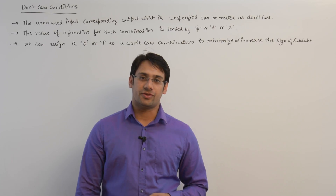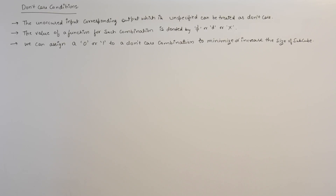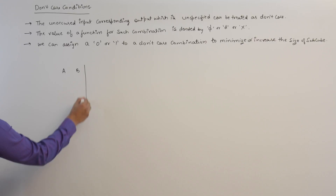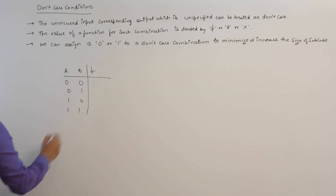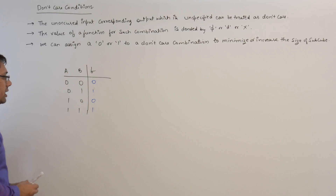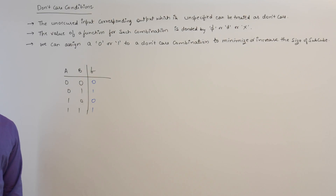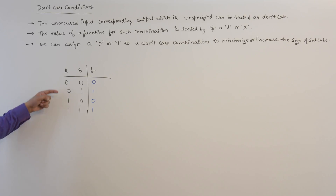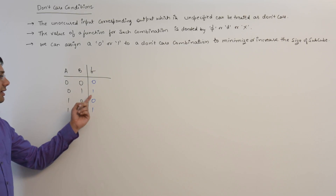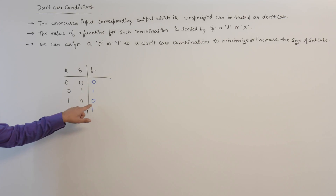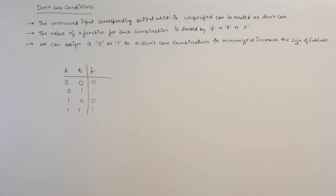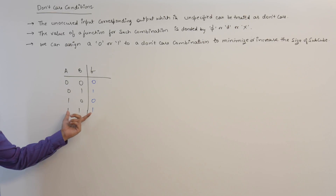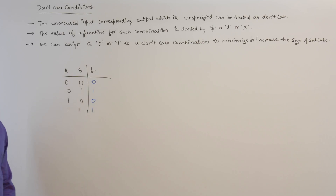Let us look at what is a don't care combination. If you have a function of two variables A and B, the combinations of A and B can be 0 0, 0 1, 1 0, and 1 1, and this function f can take any values, for example 0 1 0 1. In this case the function is said to be completely specified, because for every combination of A and B we are specifying a value for the function f. This kind of function is called a completely specified function.